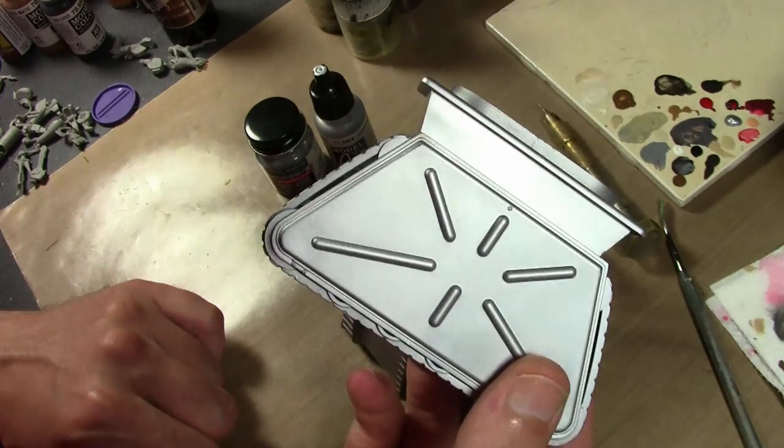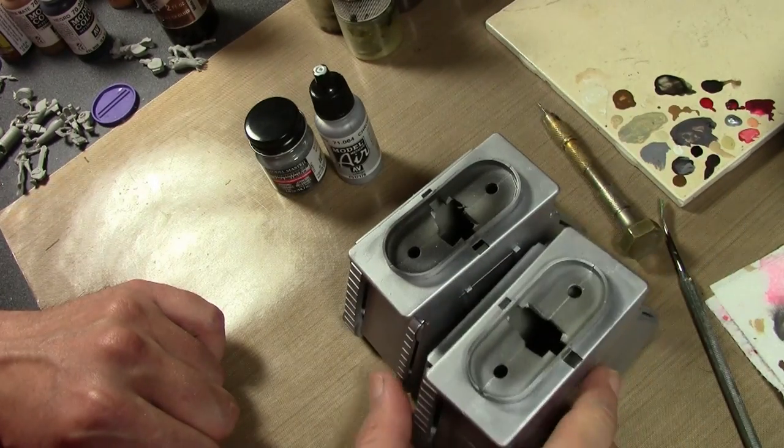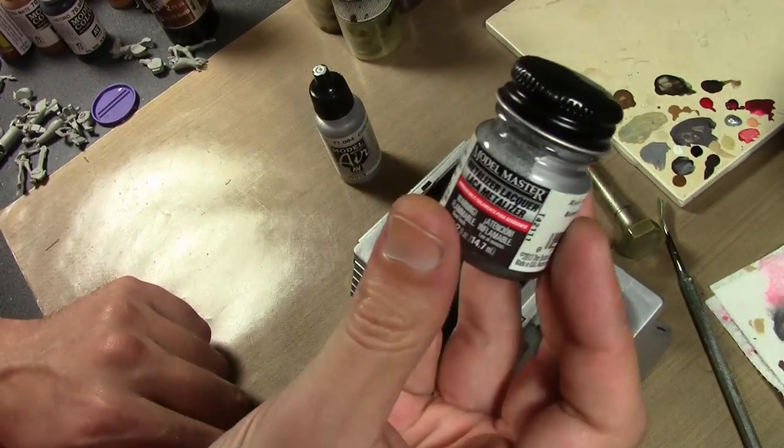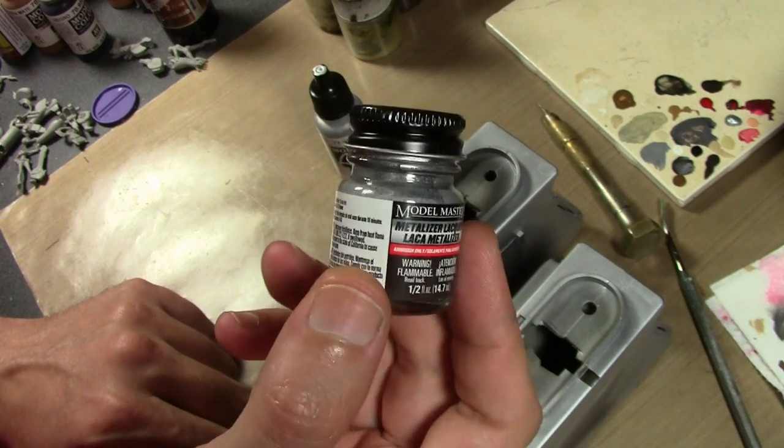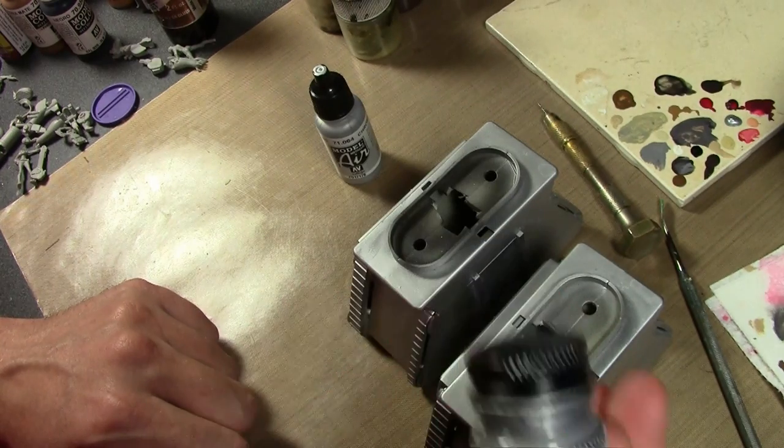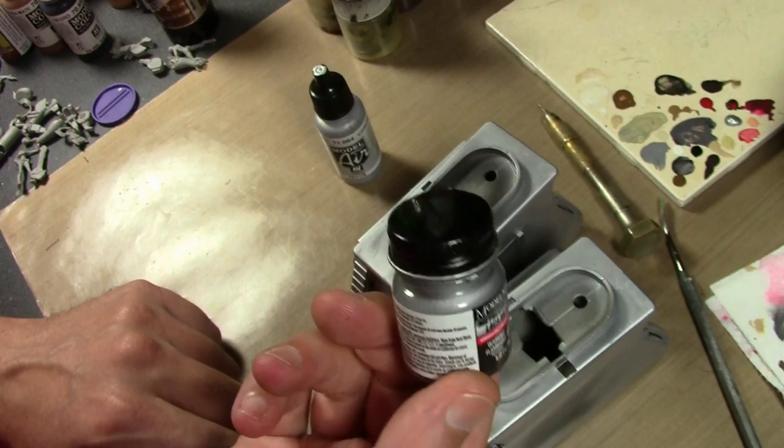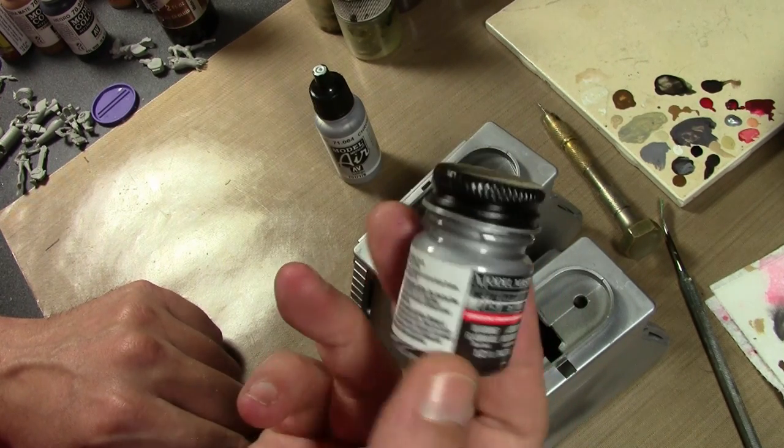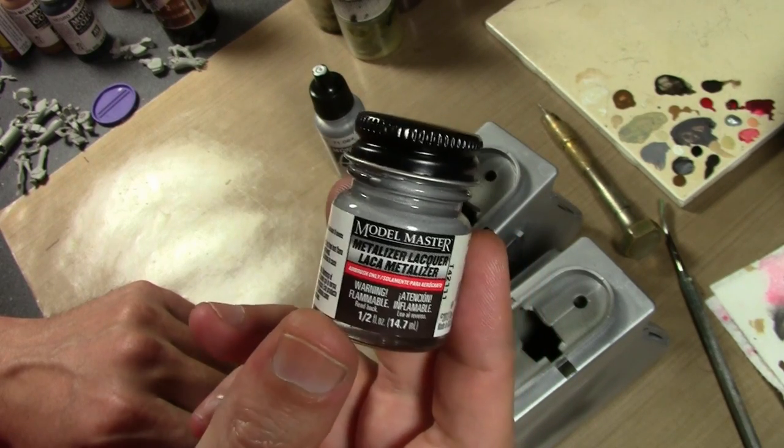However, I'm going to go back and redo this. The paint currently on this is Testors Metalizer aluminum. They recommend flat aluminum in the instructions, however my store didn't have flat aluminum. I think this is a pretty good match considering I was planning on doing a flat varnish over it at the end.